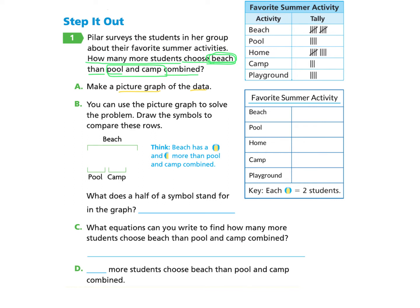I'm going to use the key at the bottom that says a beach ball equals two students, and I'm going to take a look at the tally marks for each activity and write in the symbol on the picture graph. When it is complete, it should look like this.